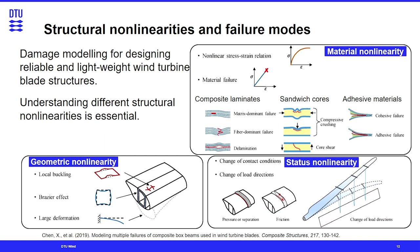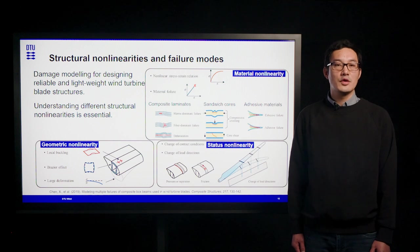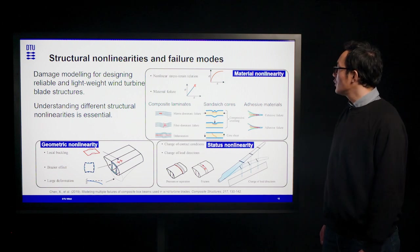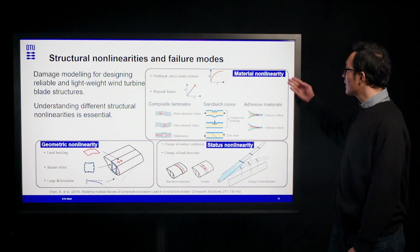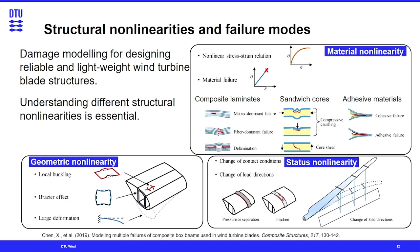In addition to structural testing, damage modeling is also very important for designing reliable and lightweight wind turbine blade structures. In order to have a good damage model, we need to understand the different structural nonlinearities. Usually we have three types: first, material nonlinearities, which include nonlinear stress-strain relations and different types of material failures, such as failure of composite laminates, sandwich cores, and adhesive materials. The second type is geometric nonlinearities, which include local buckling, the Brazier effect, and large deformation. The last type is contact nonlinearities, which includes changes in contact conditions and load directions.